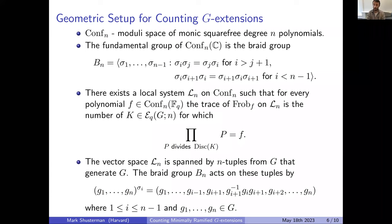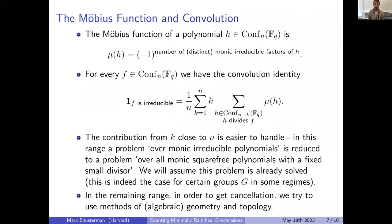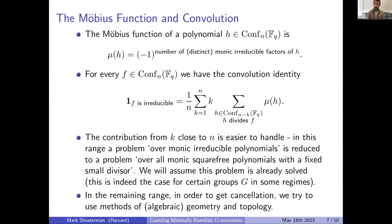This is the first step in many proofs over function fields in analytic number theory: using the function-sheaf dictionary to translate your counting problem into a problem about sheaves. Now I also want to talk about the primes part of the problem. The difficulty lies in the parity problem and the value of the Möbius function, so I'm introducing the Möbius function and explaining how to use it to get results about primes.